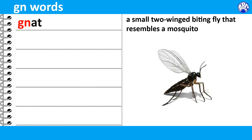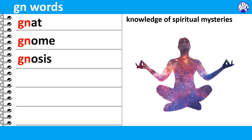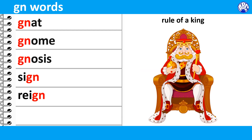G is silent in the following G.N. words: Gnat, Gnome, Gnosis, Sign.